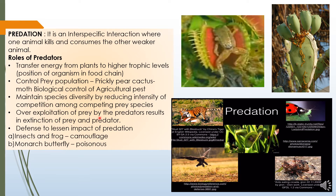Over-exploitation of the prey by the predators results in extinction of both prey and predator. If the tiger starts eating all the deer massively, the deer population will soon be finished, and then the tiger won't be able to get enough food either. If the predator feeds upon the prey too much, the prey will be finished and the predator won't get enough food.